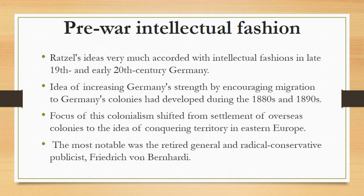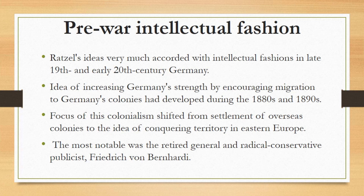Ratzel's ideas very much accorded with intellectual fashions in the late 19th and early 20th century, where various forms of social Darwinism were prevalent and where there was a growing concern about the allegedly negative effects of industrialization and urbanization. There was also a belief in the virtues of agrarian society and specifically of the peasantry. Ratzel's ideas also fitted into the general debate about German imperialism. The idea of increasing Germany's strength by encouraging migration to Germany's colonies had developed during the 1880s and 1890s.